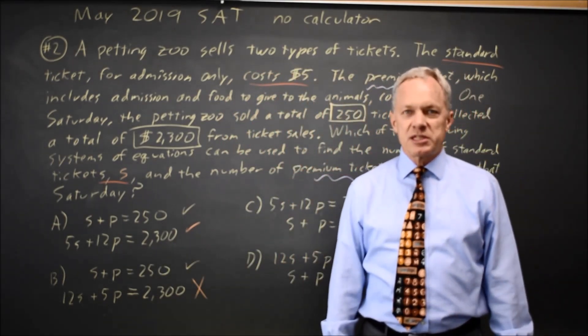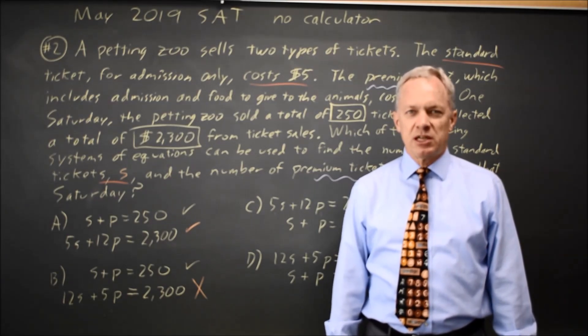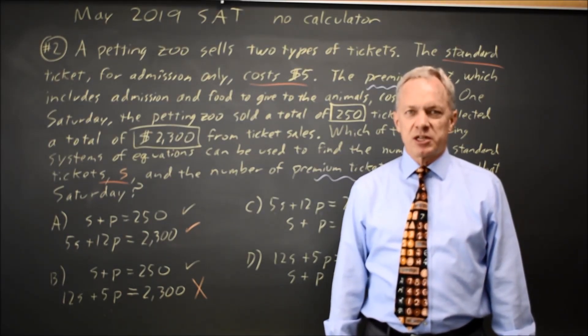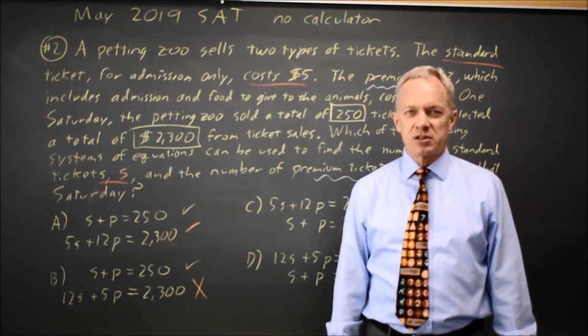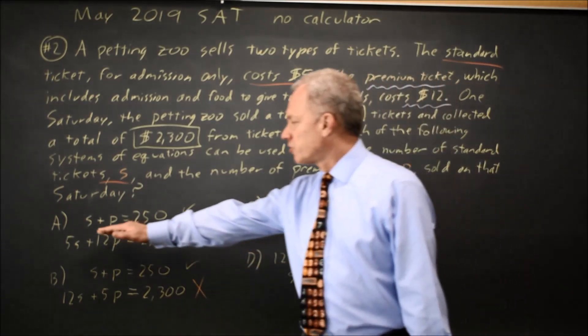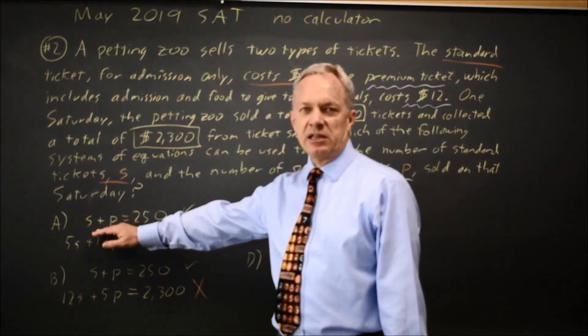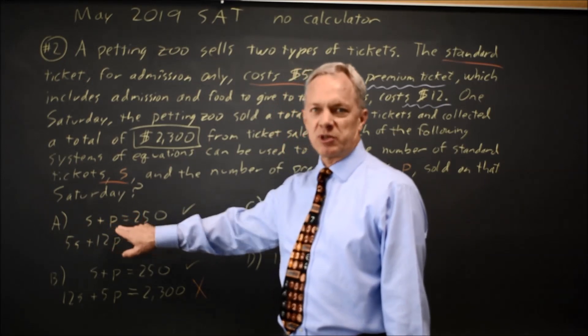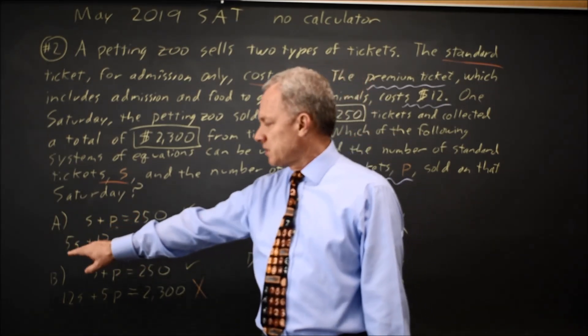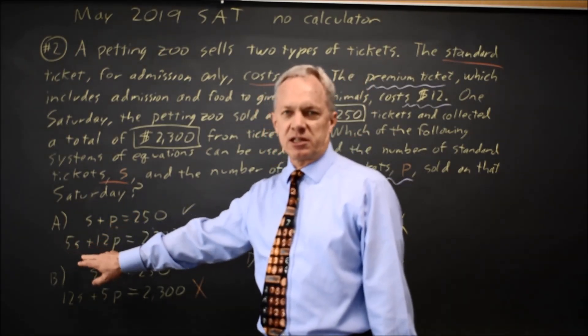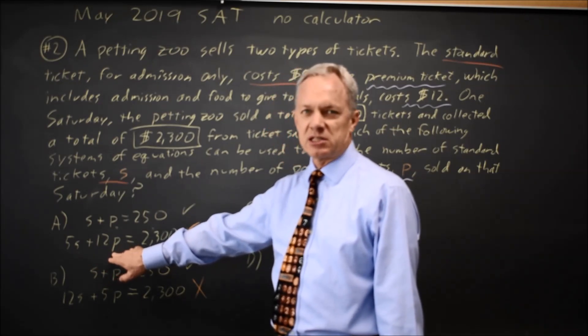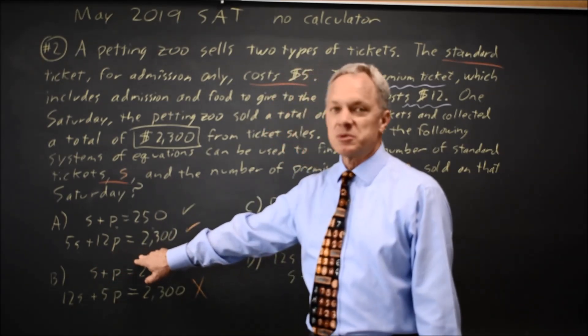College Board will almost always ask you to write a system of equations given a paragraph, so make sure that you can read carefully and put together the equations here. The first equation in choice A is the number of standard plus the number of premium equals the total number of tickets. And the second equation is the revenue from standard tickets plus the revenue from premium tickets equals the total revenue from selling tickets.